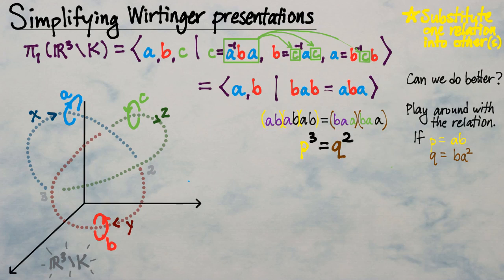P cubed equals Q squared is a much friendlier relation to work with. It's easier to use than BAB = ABA, because we don't always have those arrangements of A's and B's, but we might find three P's or two Q's next to each other in a product. So this is a much easier relation to understand.